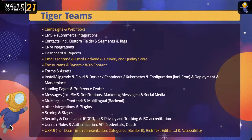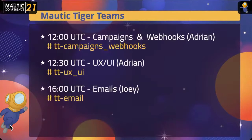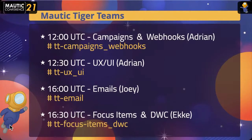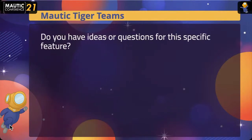Here are tiger team examples — the teams we have defined today. At the conference we are pitching four of them, the yellow ones. We did campaigns and webhooks, we did user interface, we did email, and now we're looking at focus items and dynamic web content. Every tiger team has its own Slack channel, and we'll get back to that in a second.